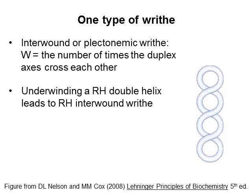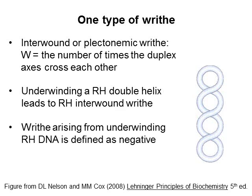If you look closely at this figure, you should be able to see that the supercoiling is right-handed. Therefore, this writhe could have been generated by underwinding the DNA. We define writhe arising from underwinding right-handed DNA to be negative. Therefore, the value of W for this particular circular DNA is negative 3. You might want to remember that right-handed interwound writhe is always negative.